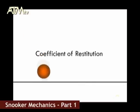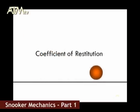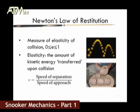To look at ball collisions, we need to first introduce the coefficient of restitution. This is a value given the letter E — E for elasticity. It is similar to the coefficient of friction in that it is a numerical value between 0 and 1 inclusive.